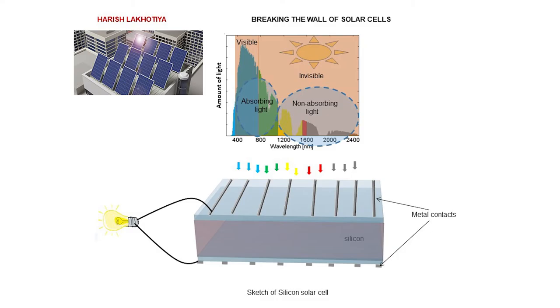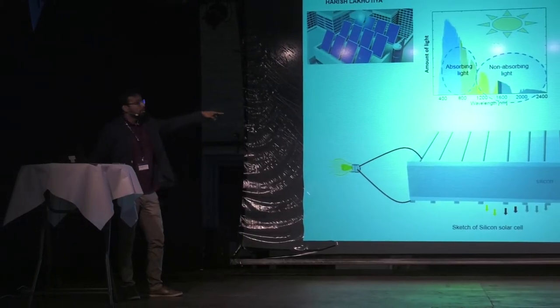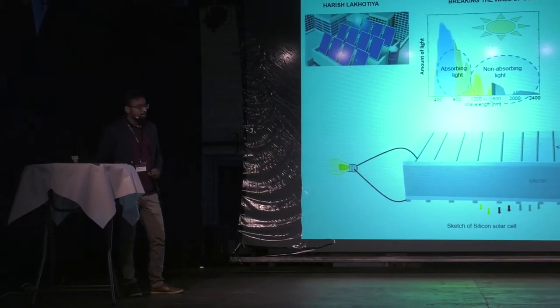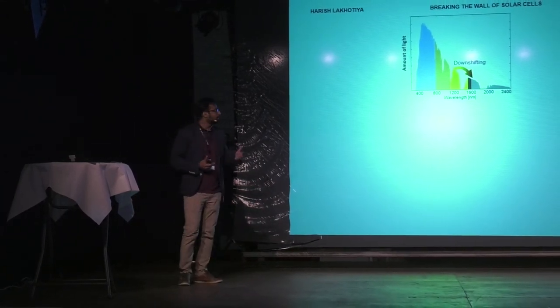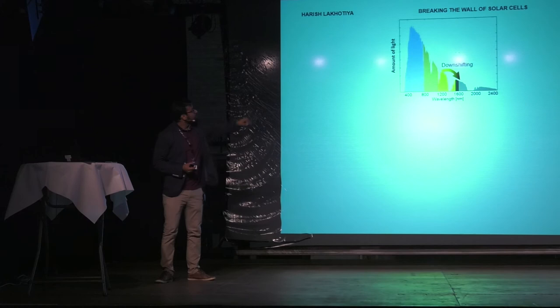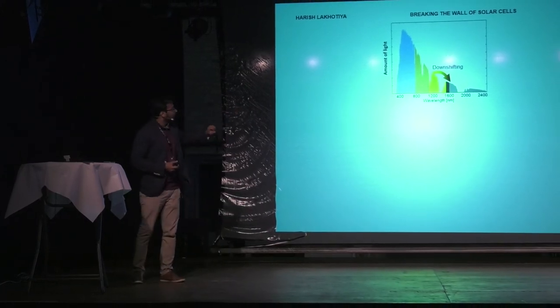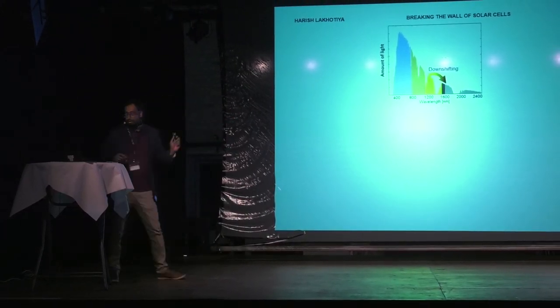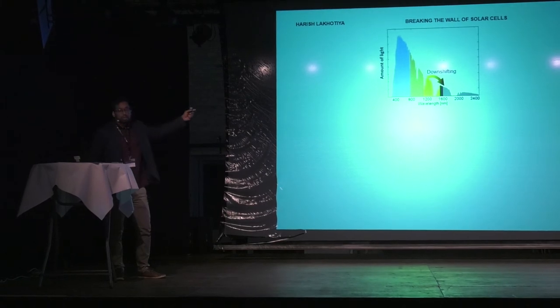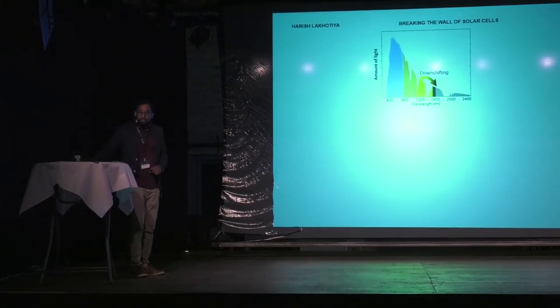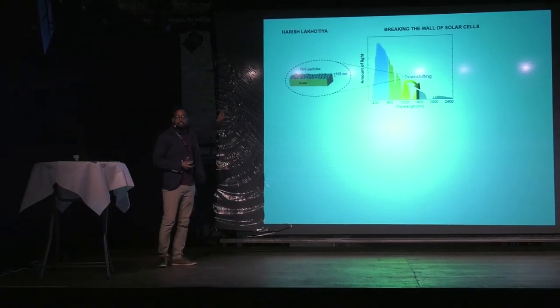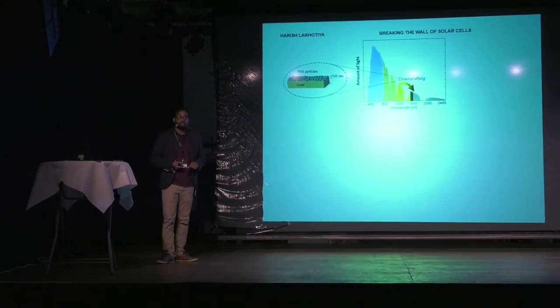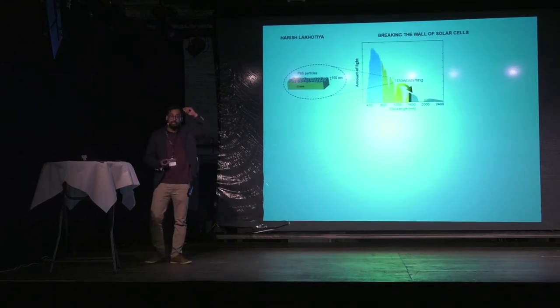In order to break this wall, I basically deal with this non-absorbing light. How would I do this? I do it by two processes. Process one where I convert this yellow section of light into red section of light. I do it, we call this process down-shifting, where we basically make lead sulfide particles and make a thin film around 100 nanometer, which is roughly 2,000 times thinner than our hair thickness.